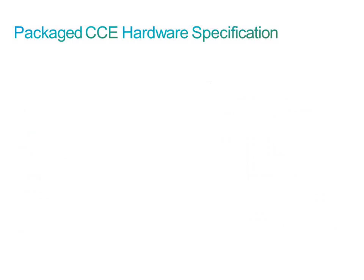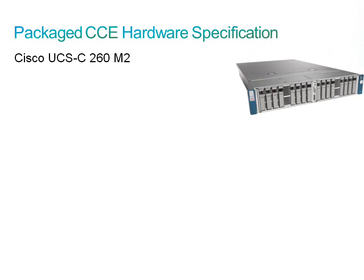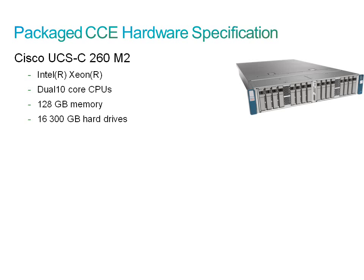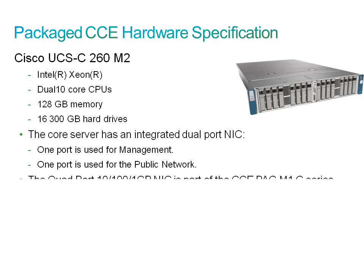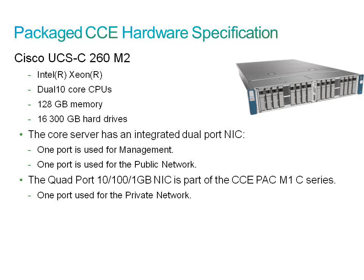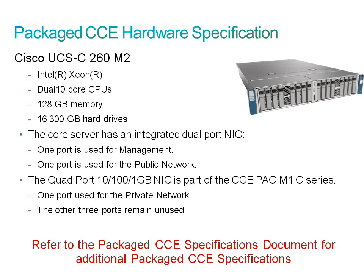One example of these specifications is the hardware specifications. Currently, only the UCSC-260M2 server is supported. This box provides ample processing and storage capacity, including dual 10-core CPUs, 128GB of RAM, and 16 300GB hard drives. It also includes two integrated network interface cards: one used for management and the other connected to the public network. Additionally, it has a quad 10-100 gigabit network card, with one port connected to the private network and the other three remaining unused. Refer to the Package CCE specifications document at cisco.com for additional specifications.